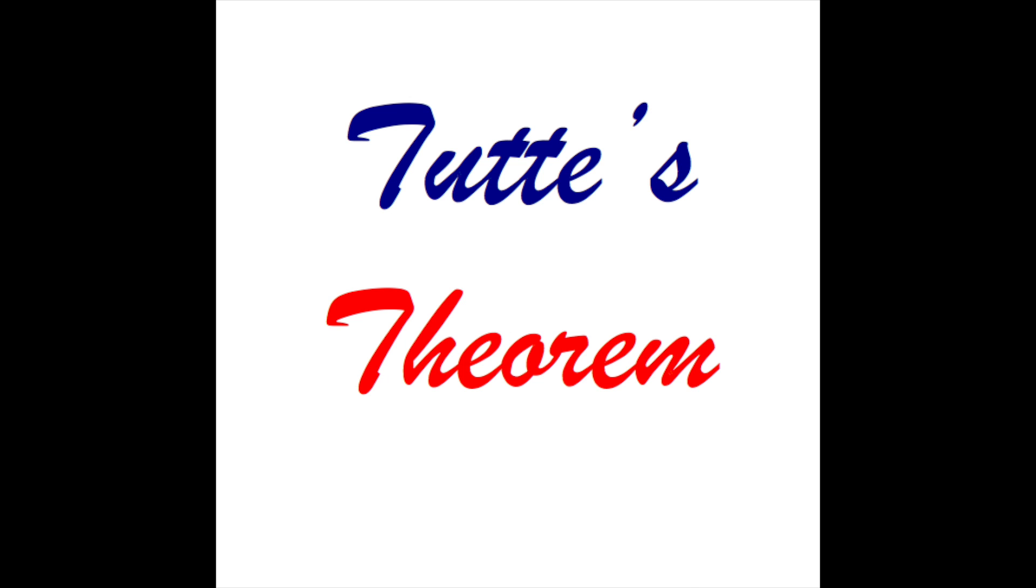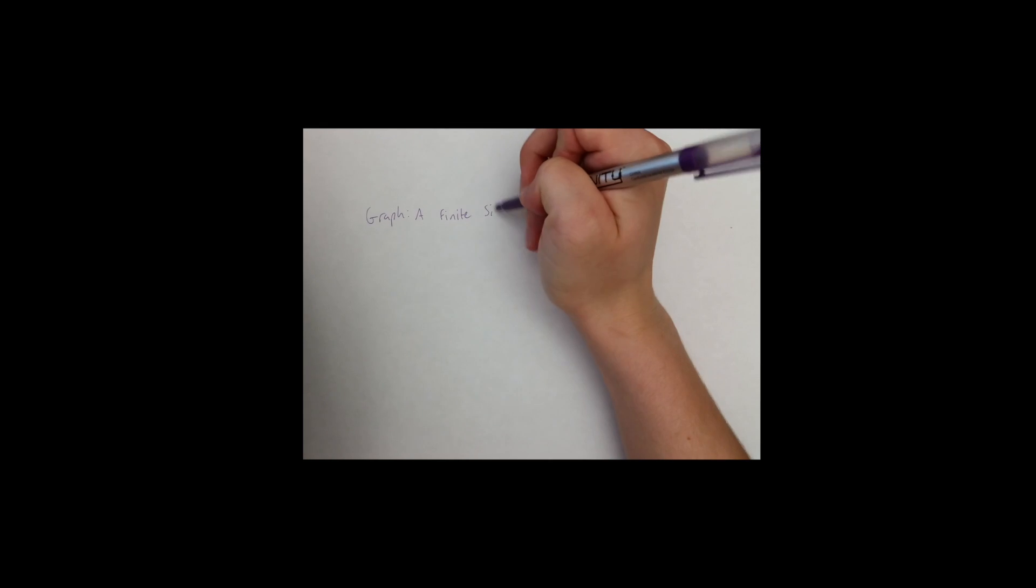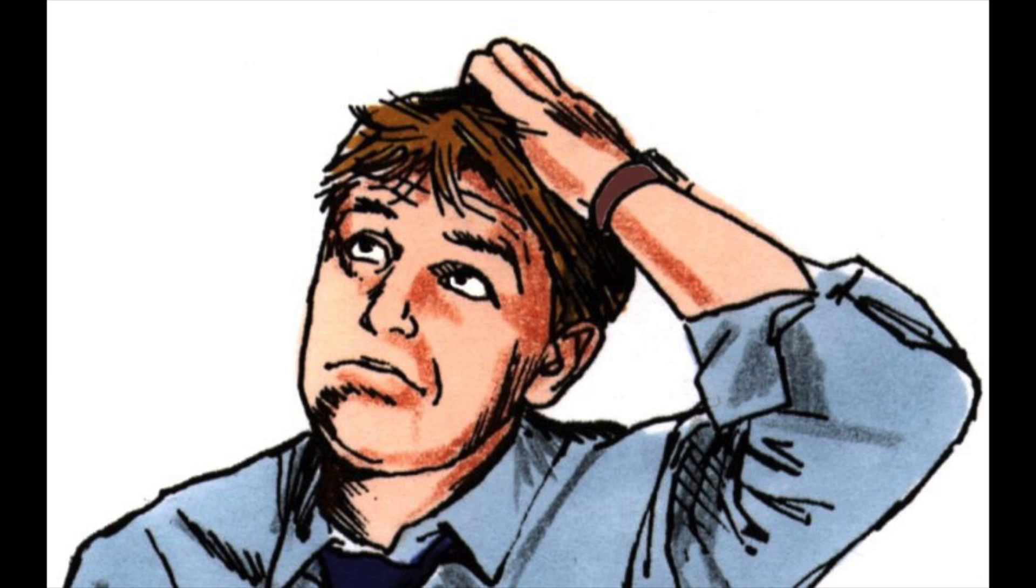let's remind ourselves of some of the basic definitions we will need to understand the proof. A graph is a finite simplicial one complex. It's also sometimes defined as a collection of vertices and edges between vertices.